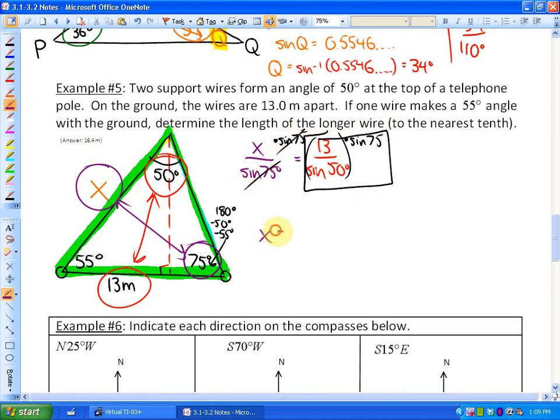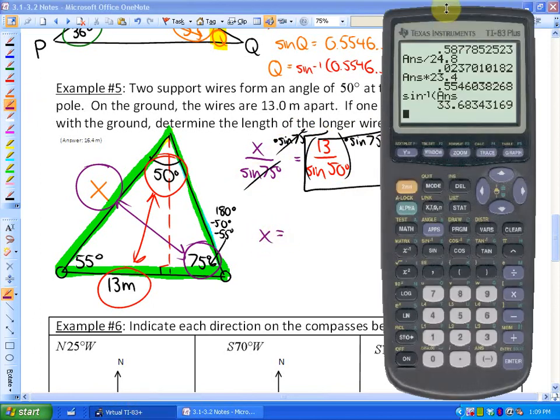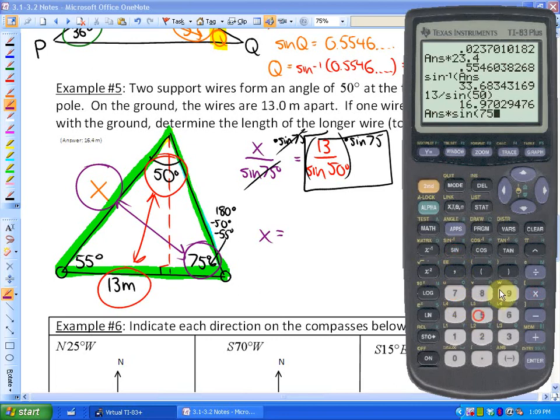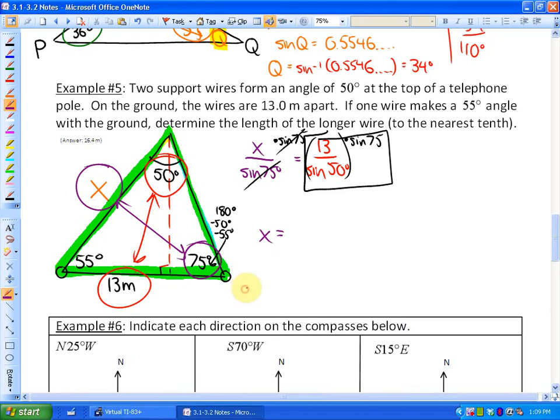Be careful as to how you calculate that on your calculator. X is equivalent to—I would do 13 divided by sine 50, equals, there's my proportion, and now times that by sine 75 degrees. That gets me roughly 16.4 to the nearest tenth, so that distance would be 16.4 meters. The thing to do in word problems is always consider the context and if it makes sense. This length could reasonably be 16.4 meters.